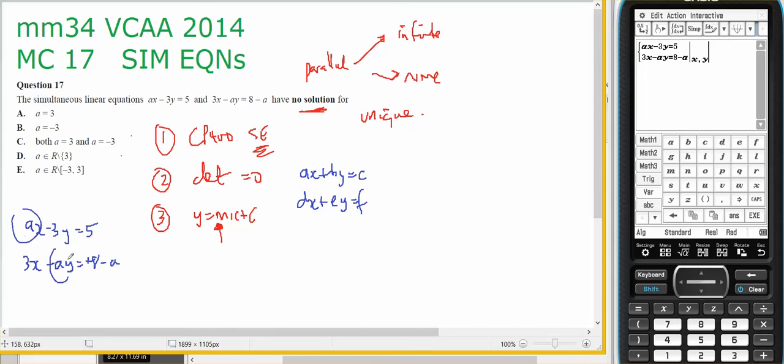Therefore, I've got a times negative a, so minus a squared, minus 3 times minus 3 minus 9 equals 0. So a squared equals 9, a equals plus or minus 3.